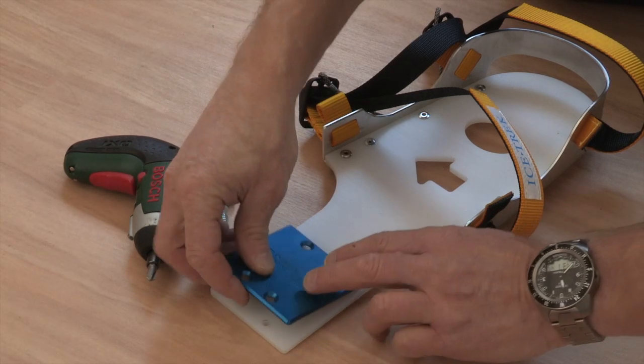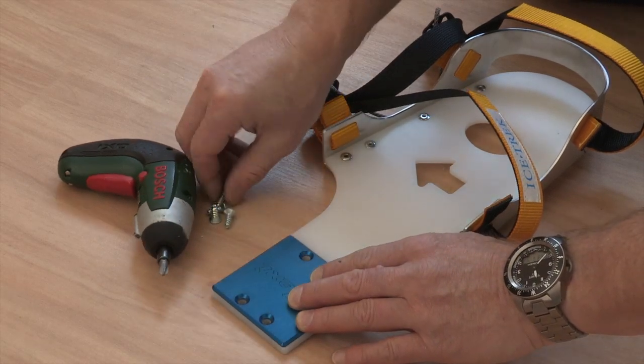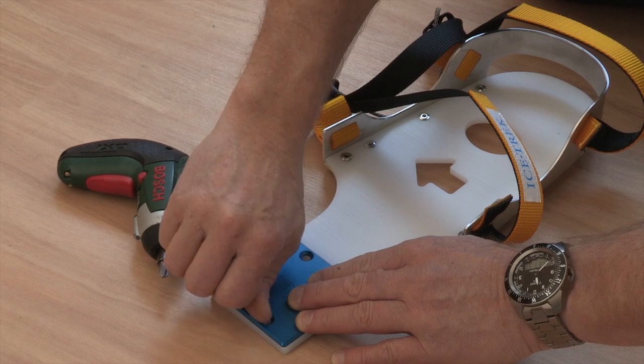Align the mounting plate over the flex stem of your Flexi binding and insert four screws until the tips protrude a couple of millimetres.